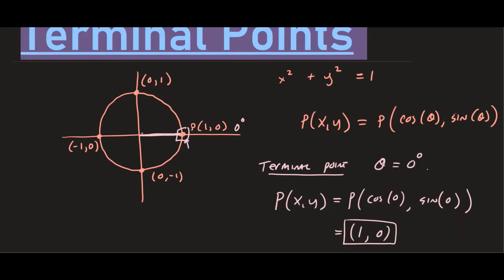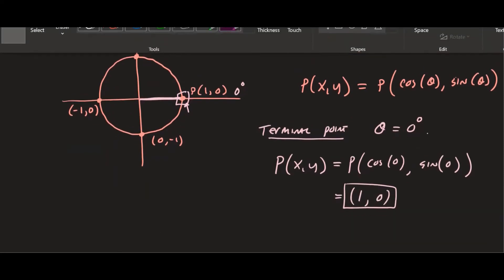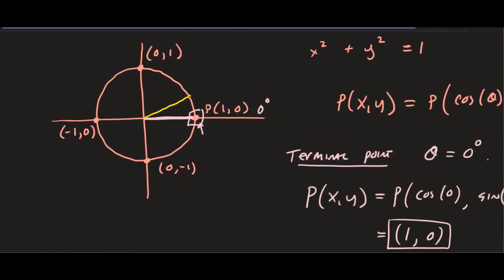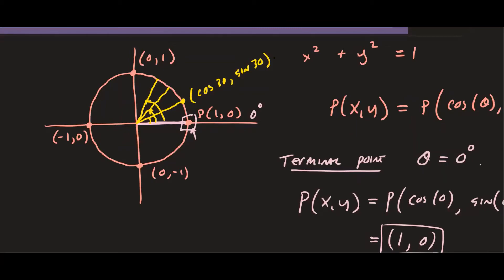There are a few other angles you should know before we get to more questions on finding terminal angles — these three special angles: 30°, 45°, and 60°. For 30°, the terminal point is determined by (cosine 30°, sine 30°). Cosine of 30° is √3/2 and sine of 30° is 1/2. So the terminal point for a 30° angle is (√3/2, 1/2).